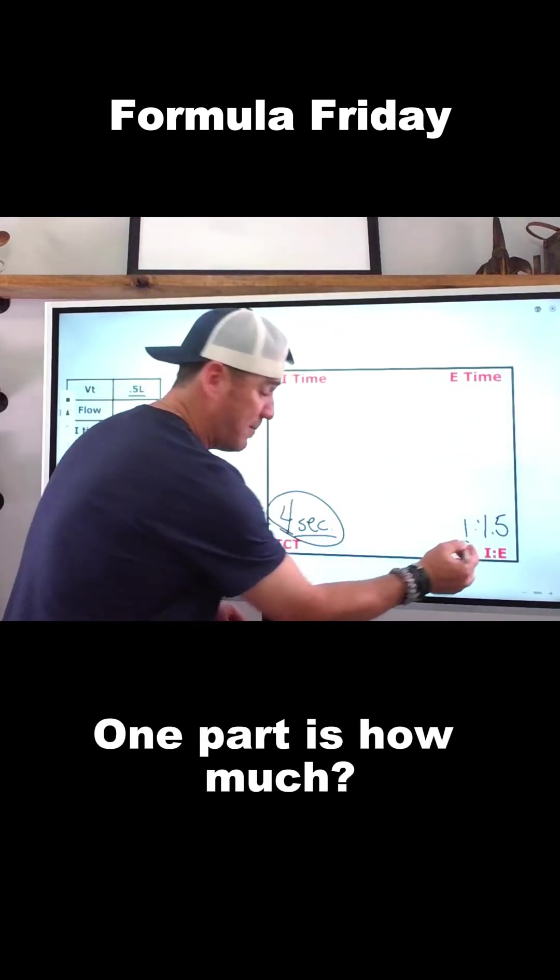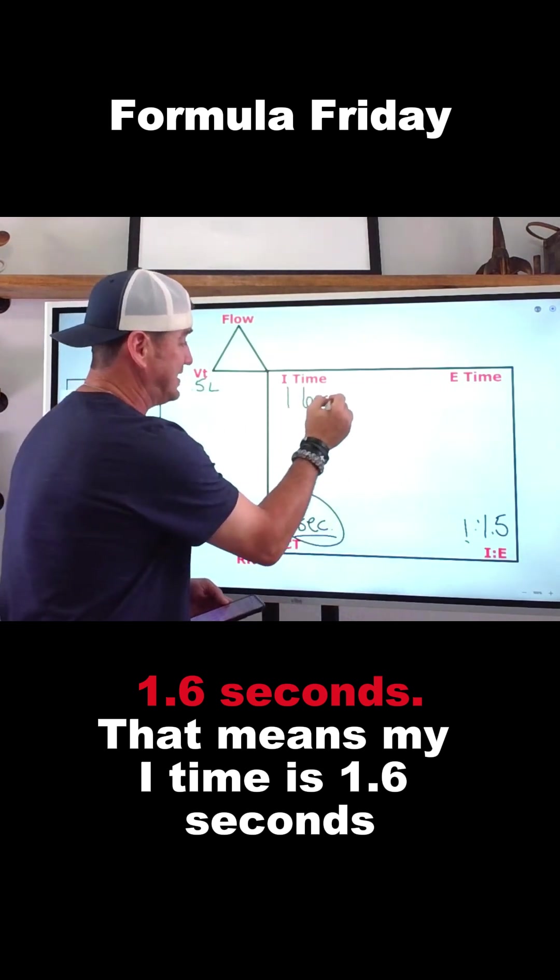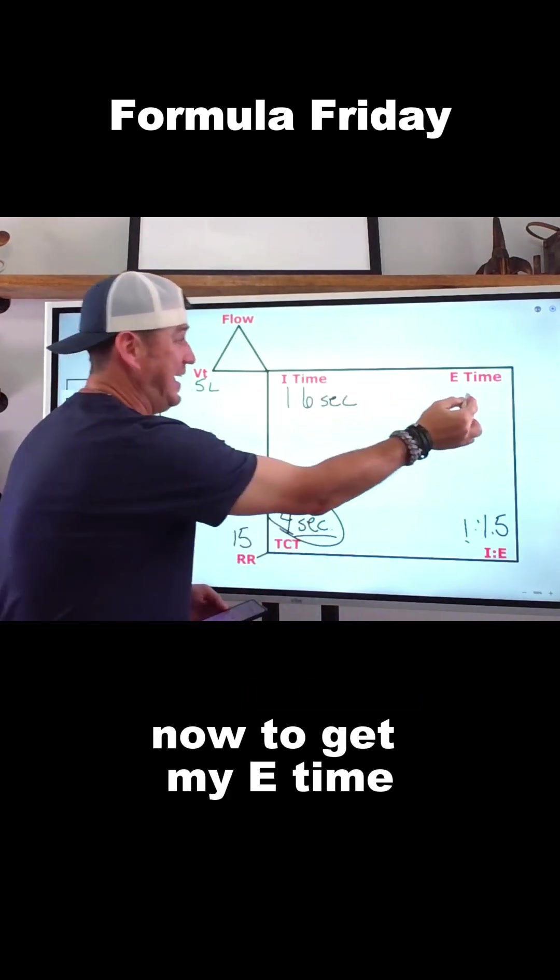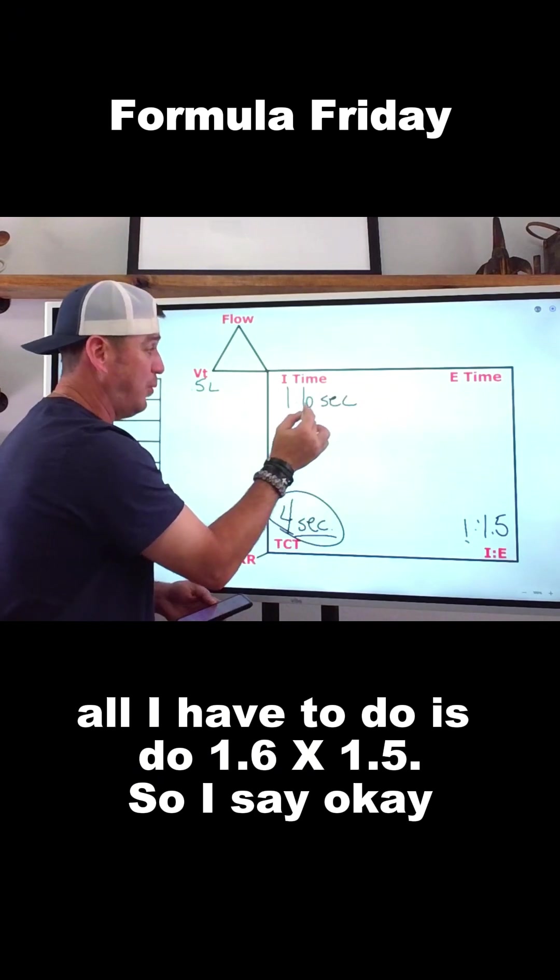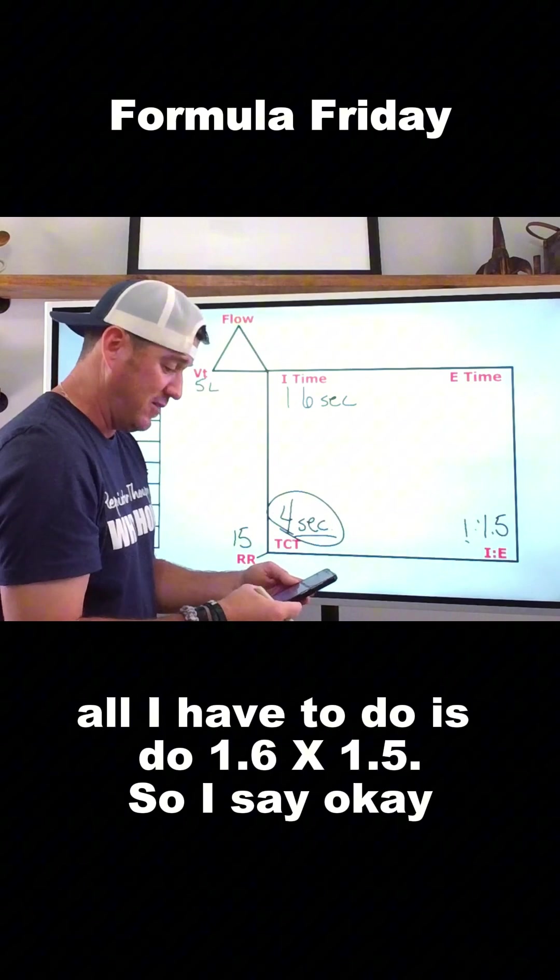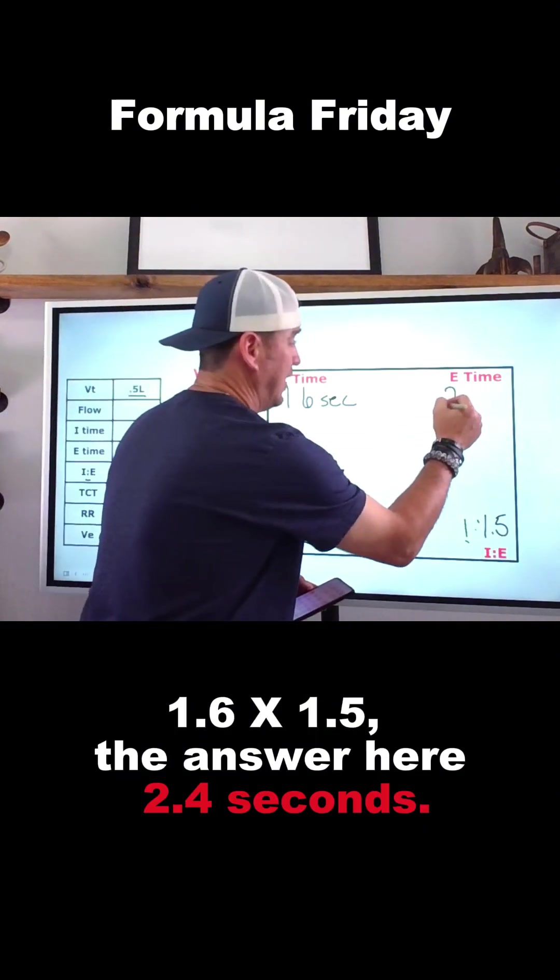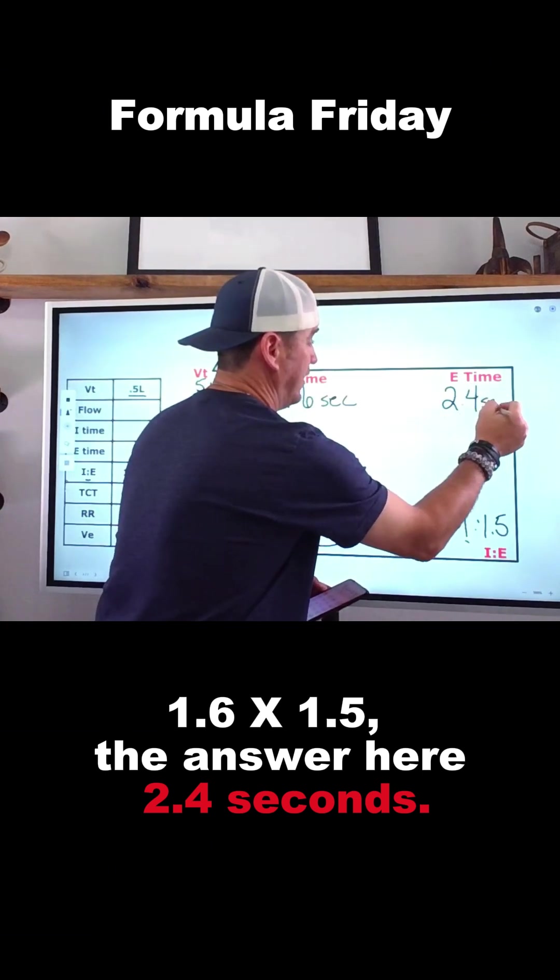One part is how much? 1.6 seconds. That means my I time is 1.6 seconds. Now, to get my E time, all I have to do is 1.6 times 1.5. So I say, okay, 1.6 times 1.5. The answer here, 2.4 seconds.